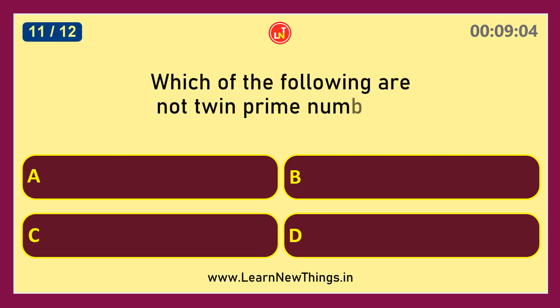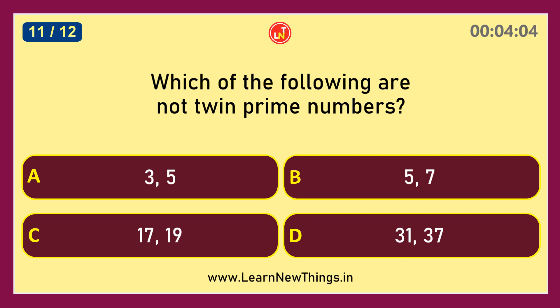Which of the following are not twin prime numbers? 31 and 37.